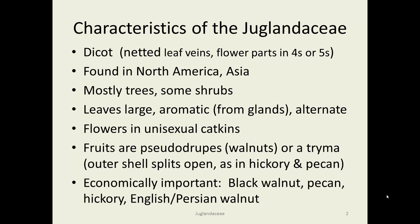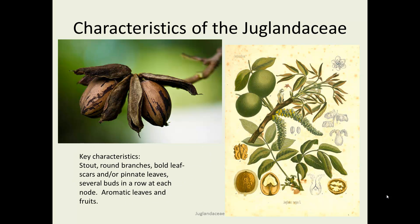There are many economically important plants in this family: black walnut, English or Persian walnut, pecans, and hickories. Here you can see, upper on the left, a photograph of a trima — a hickory that has ripened and the outer husks are opening up to release the mature nut.